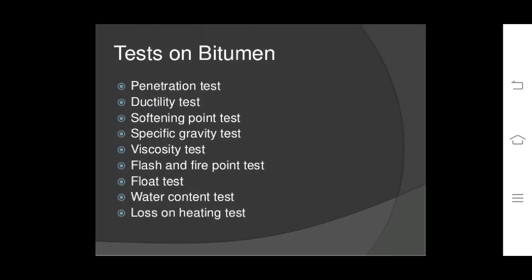Tests on bitumen: there are various tests conducted to check bitumen quality — penetration test, ductility test, softening point test, specific gravity test, viscosity test, flash and fire point test, float test, water content test, and loss on heating test.